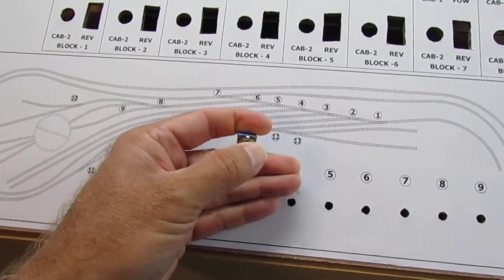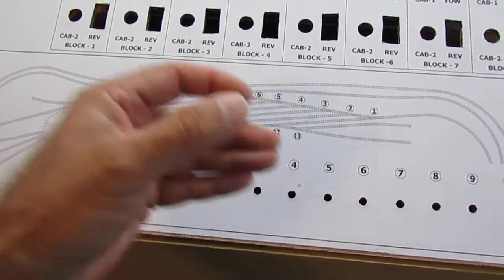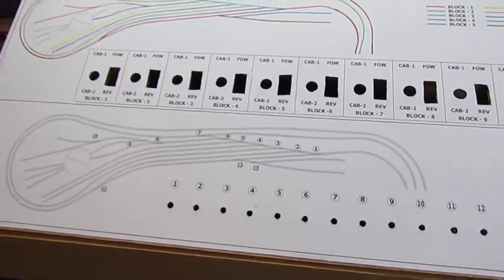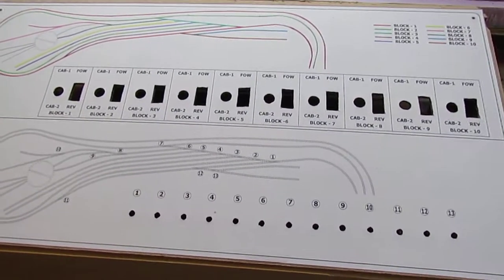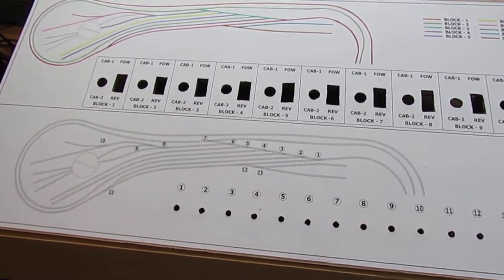Because with these Atlas under the table switches, if you continuously send them a direct current it'll burn the switch out, so the switch machine out. That's why I decided to go with the momentary switches.